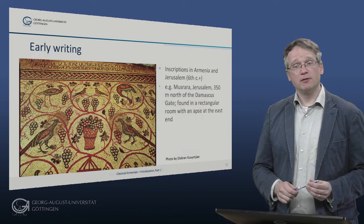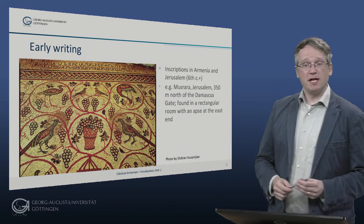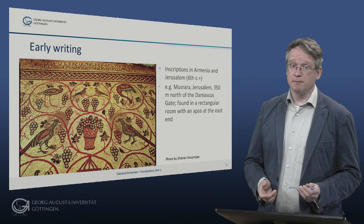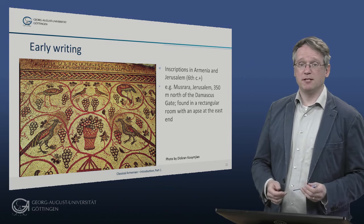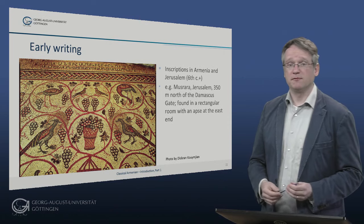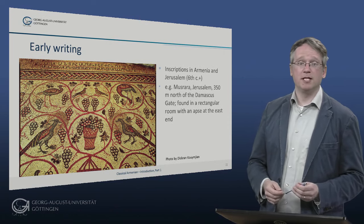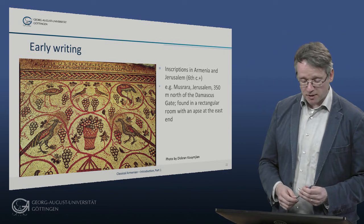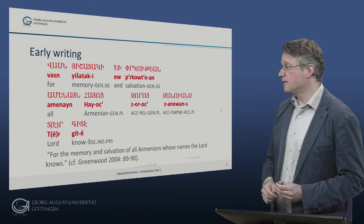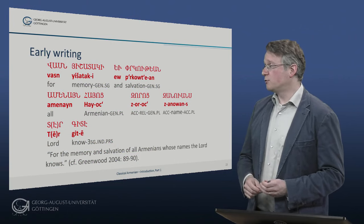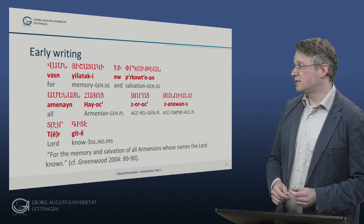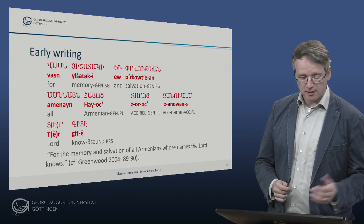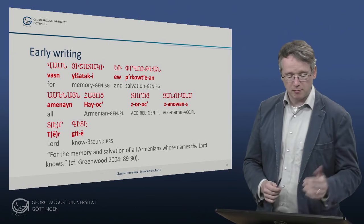Now to early evidence for writing in Armenian. The first evidence for Armenian writing is provided by inscriptions, both in early medieval Armenia and in Jerusalem, where Armenian monasteries were established at least in the 6th century. For example, from the neighborhood of Musrara, an inscription was found in a rectangular room with an apse at the east end, close to the Damascus Gate. Here is a photograph of this inscription, and here you can see the text, the transliteration, and the glossing below.